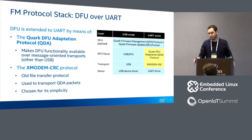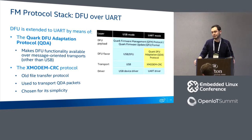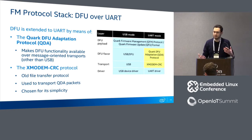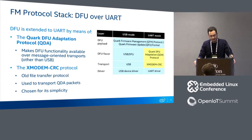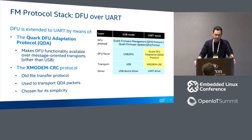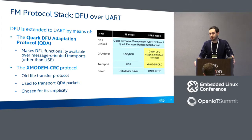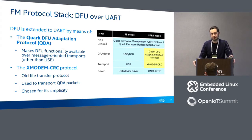Since DFU is a USB standard but we wanted to support UART as well, we added the Quark DFU Adaptation protocol — an adaptation layer that makes DFU's state machine and communication protocol available over UART. The QDA protocol makes DFU available over any message-oriented transport. Since UART is stream-oriented, we added another layer using the X-Modem protocol — an old file-transfer protocol — to transport QDA packets and turn the channel into a message-oriented one. We chose X-Modem because of its simplicity and reduced footprint.